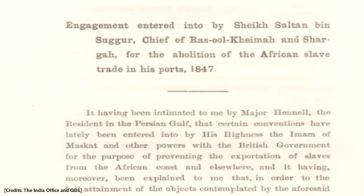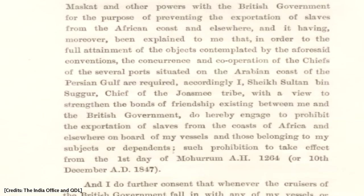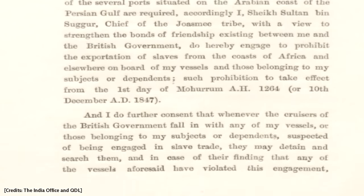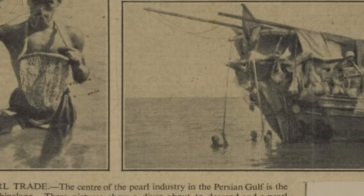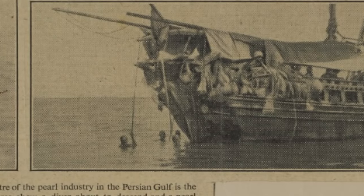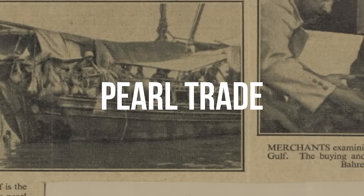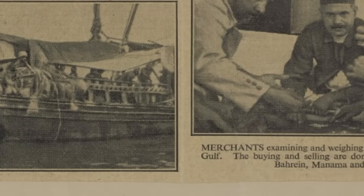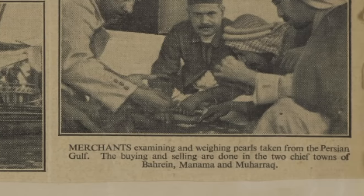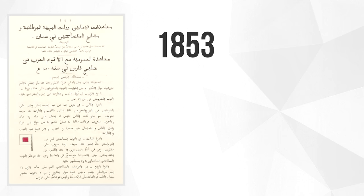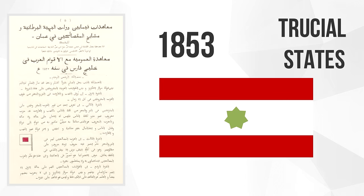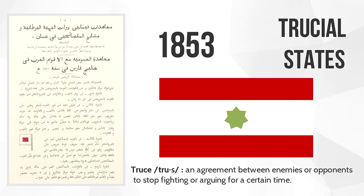Also the treaties were not permanent and were to be renewed time and time again. But the sheikhs realized that these treaties created a peaceful atmosphere for their pearl trade, which was very important for their economies since oil wasn't a thing yet. So they signed a permanent treaty with the British in 1853, and hence these sheikhdoms were known as the Trucial States, since they were under a truce.